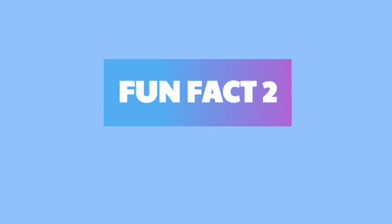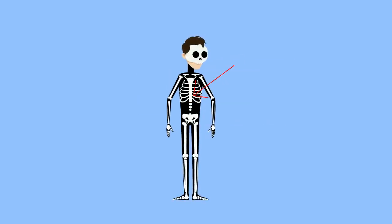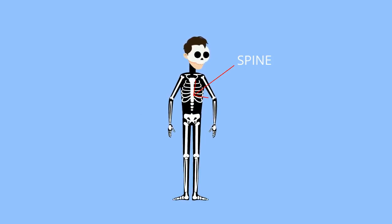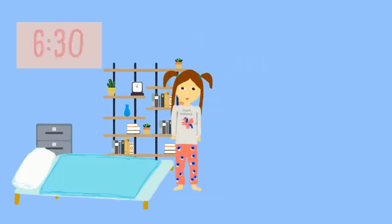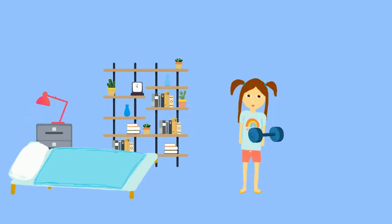Fun Fact 2. Gravity pulls on you daily to keep you firm on the ground, but it has health impacts. Gravity pulls hard against the spine if you stand much during the day. From about 6:30 in the morning to about 11 o'clock, you can shrink by about 1 to 2 centimeters — that's a lot. So it is vital to exercise often, so as not to shrink.